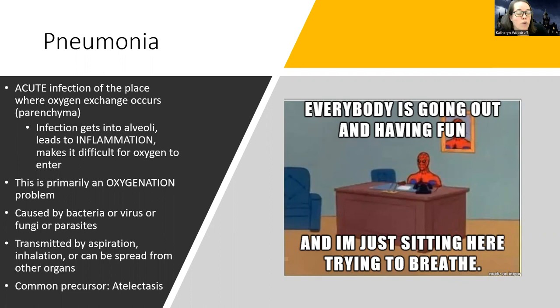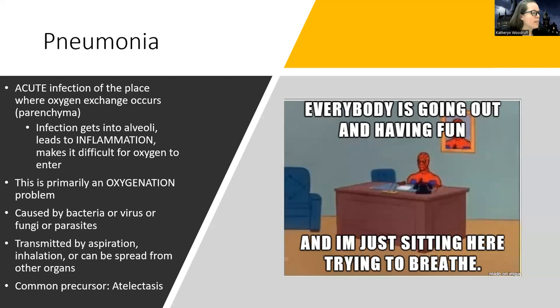Pneumonia is an acute infection, which means it's not a chronic disorder. It's an infection in the place where oxygen exchange occurs, which is known as the parenchyma — I used to pronounce this 'parenchyma' for the longest time, but it is parenchyma. It affects the alveoli, where oxygen is supposed to get in and carbon dioxide is supposed to get out. The infection leads to inflammation, making it difficult for oxygen to get in. So this is primarily an oxygen problem.